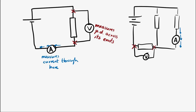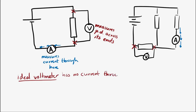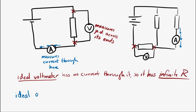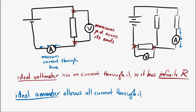An ideal voltmeter — the best voltmeter we can imagine — would have no current flowing through it. It would be like a brick wall for current; it would have an infinite resistance if it were ideal. An ideal ammeter, however, shouldn't affect the current that goes through it. So an ideal ammeter should just let current flow through it and should have zero resistance.